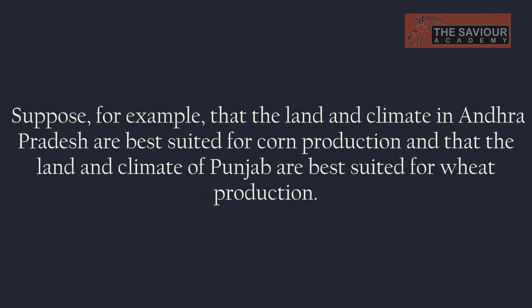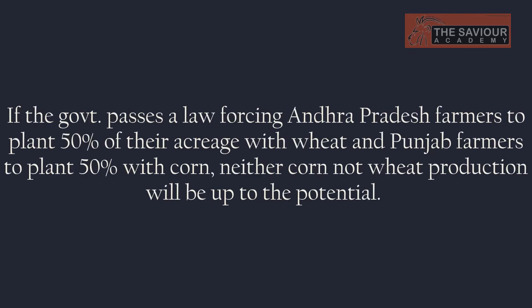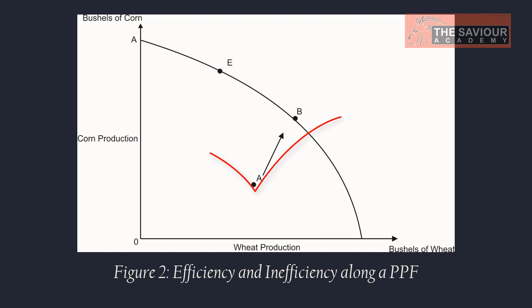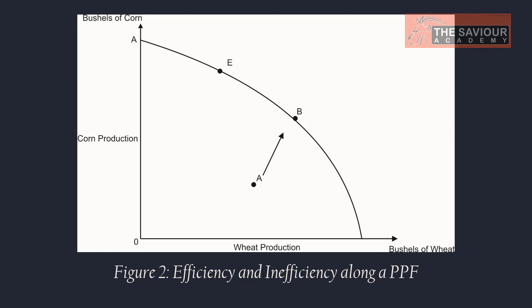Suppose, for example, that the land and climate in Andhra Pradesh are best suited for corn production and those of Punjab are best suited for wheat production. If the government passes a law forcing Andhra Pradesh farmers to plant 50% of their acreage with wheat and Punjab farmers to plant 50% with corn, neither corn nor wheat production will reach its potential. The economy will be at a point such as A, inside the PPF. Allowing each state to specialize in producing the crop it produces best increases the production of both crops and moves the economy to a point such as B, as shown in the figure. Society ends up inside its PPF when resources are used inefficiently.